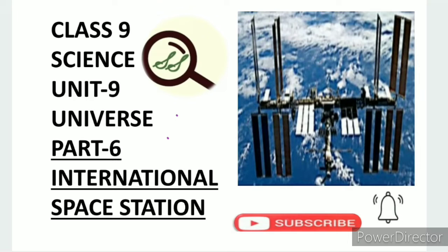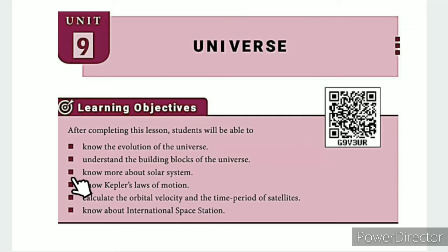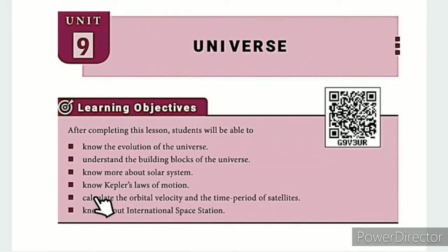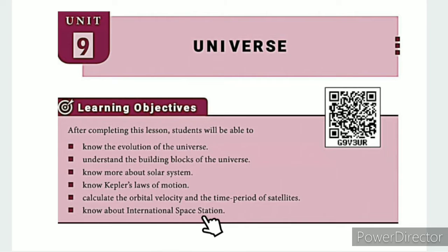Greetings from SS Class 9 Science Unit 9 Universe Part 6: International Space Station. In this lesson, the learning objectives are: know the evolution of the universe, understand the building blocks of the universe, know more about the solar system, know Kepler's laws of motion, calculate the orbital velocity and time period of a satellite, and know about the International Space Station.